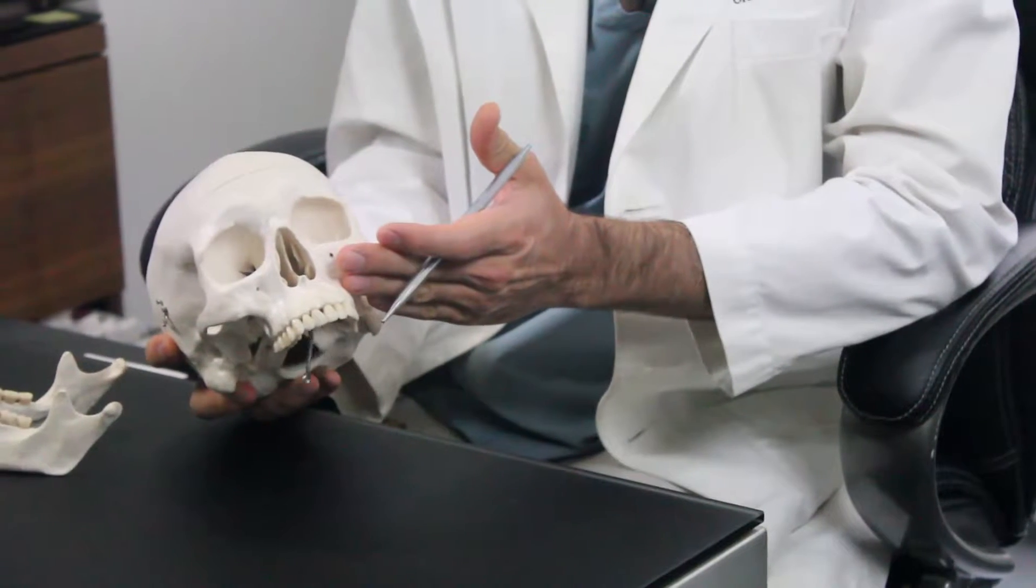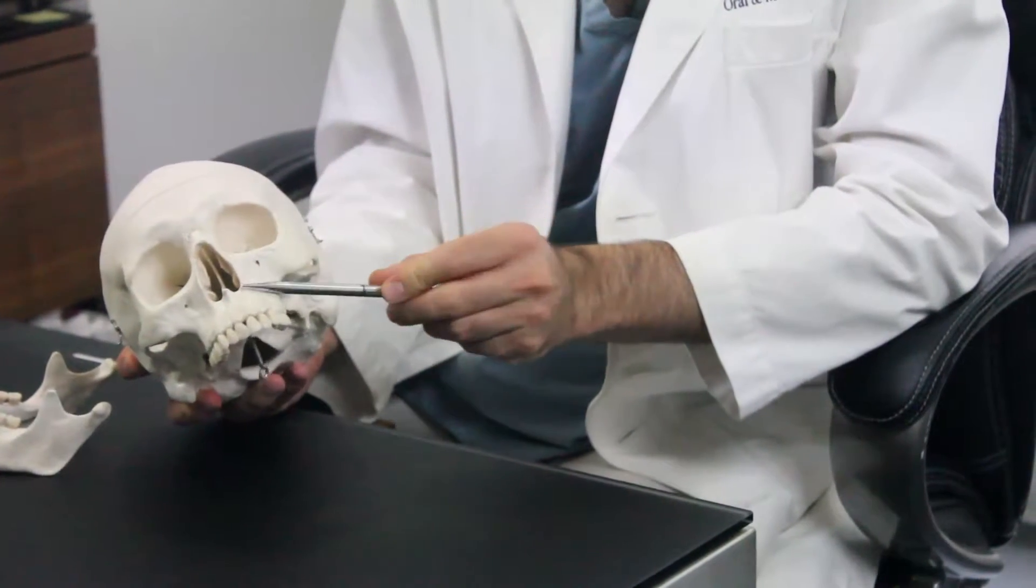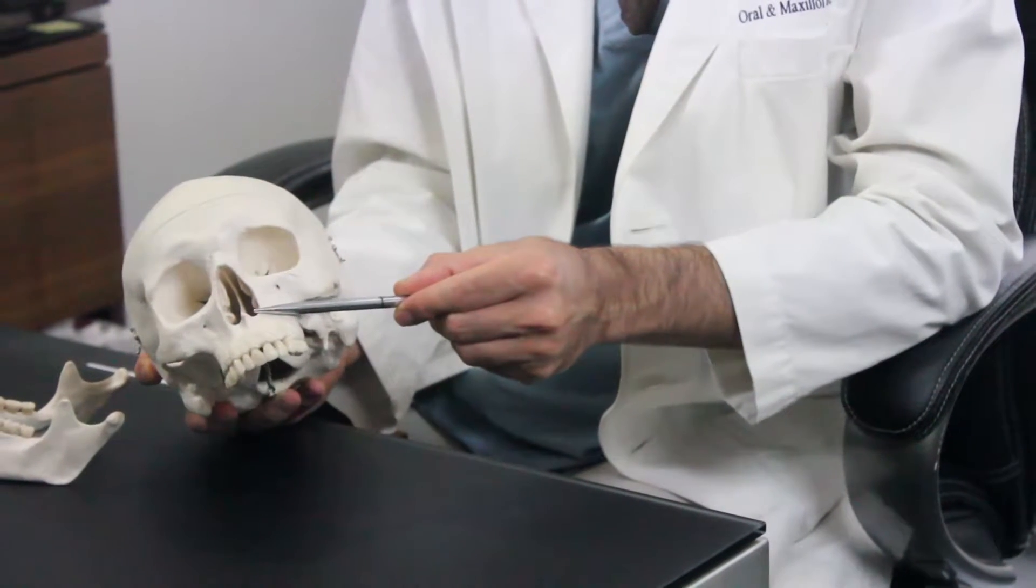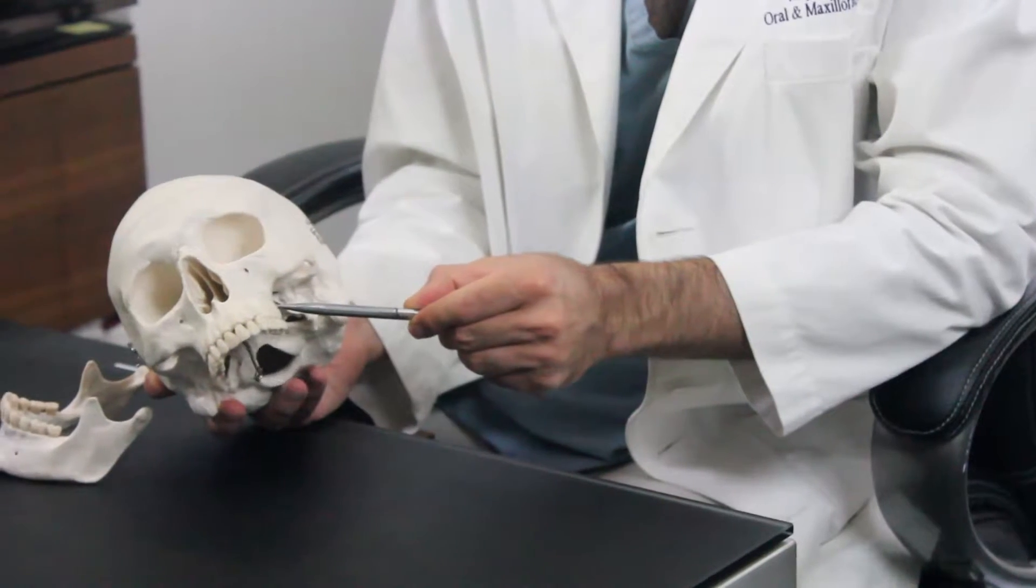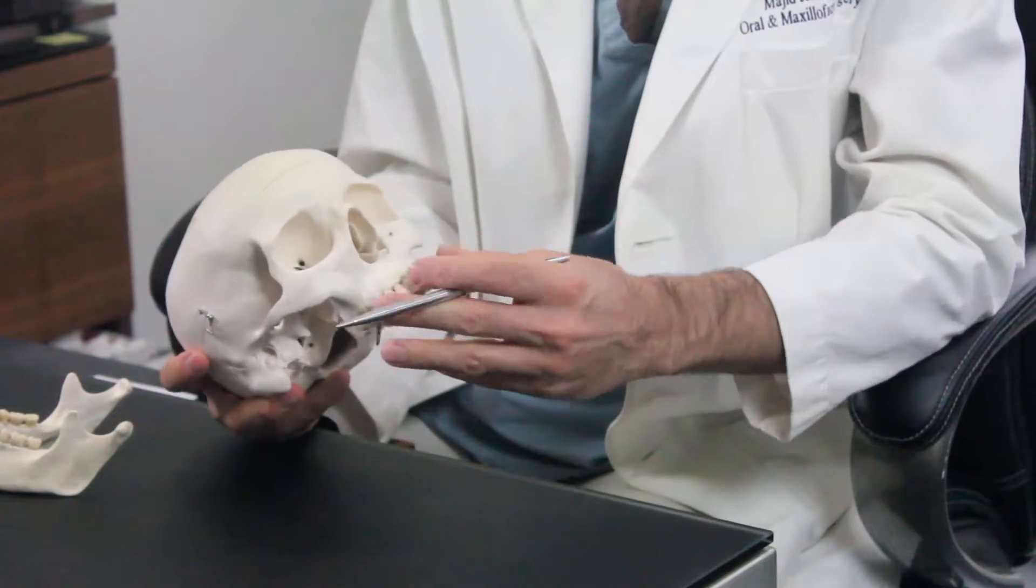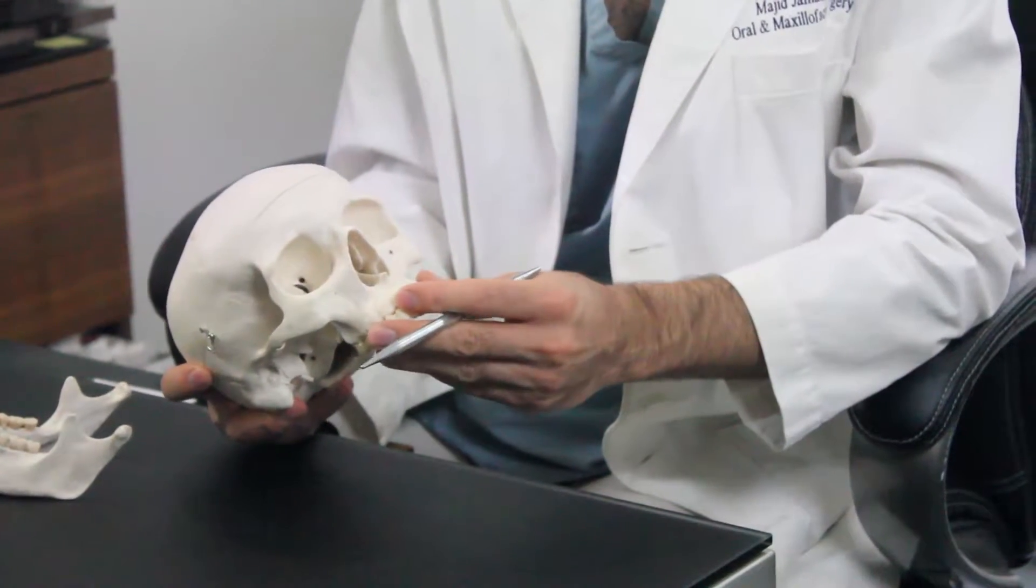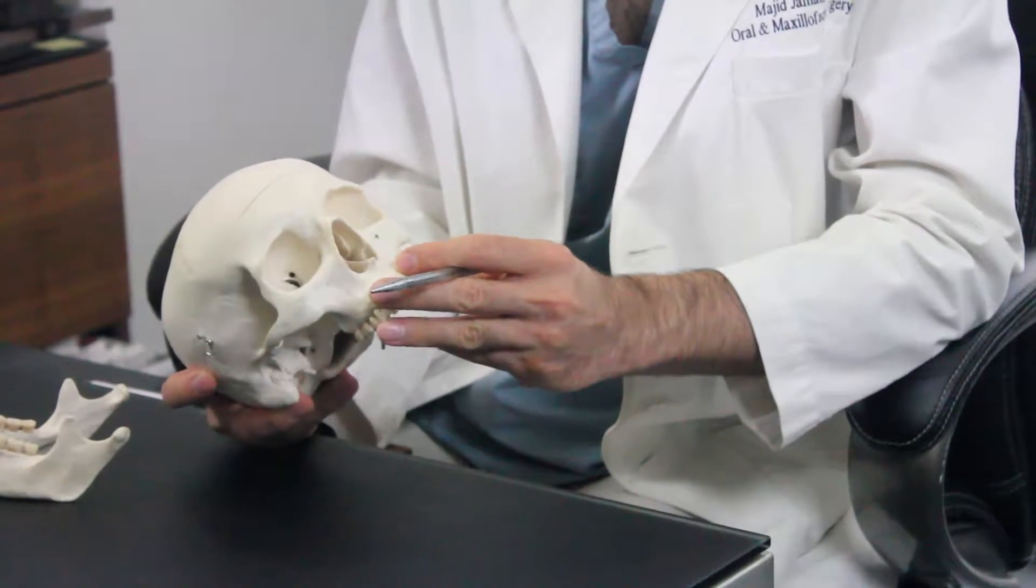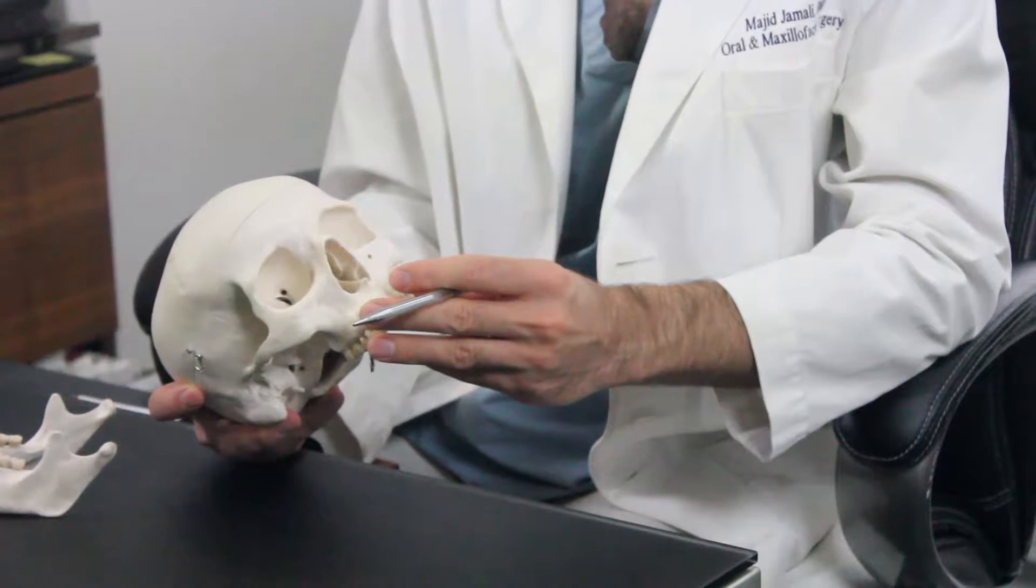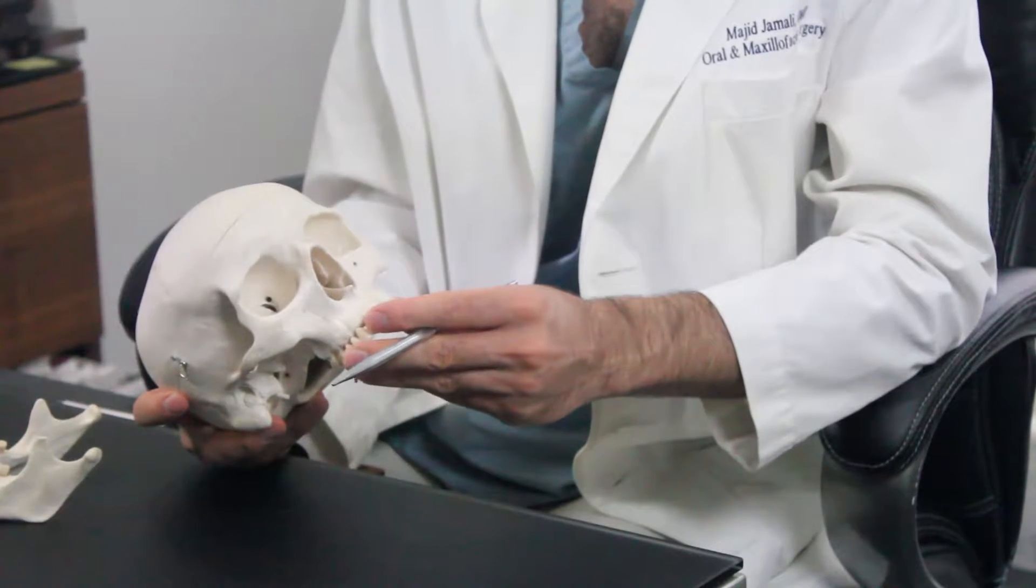Basically once the gums are elevated, with a saw and osteotomy, a cut in the bone is made from the side of the nose to the back of the jaw. And the same thing on the other side. The jaw is separated from the skull, and this piece can move forward as much as it was measured before the surgery.